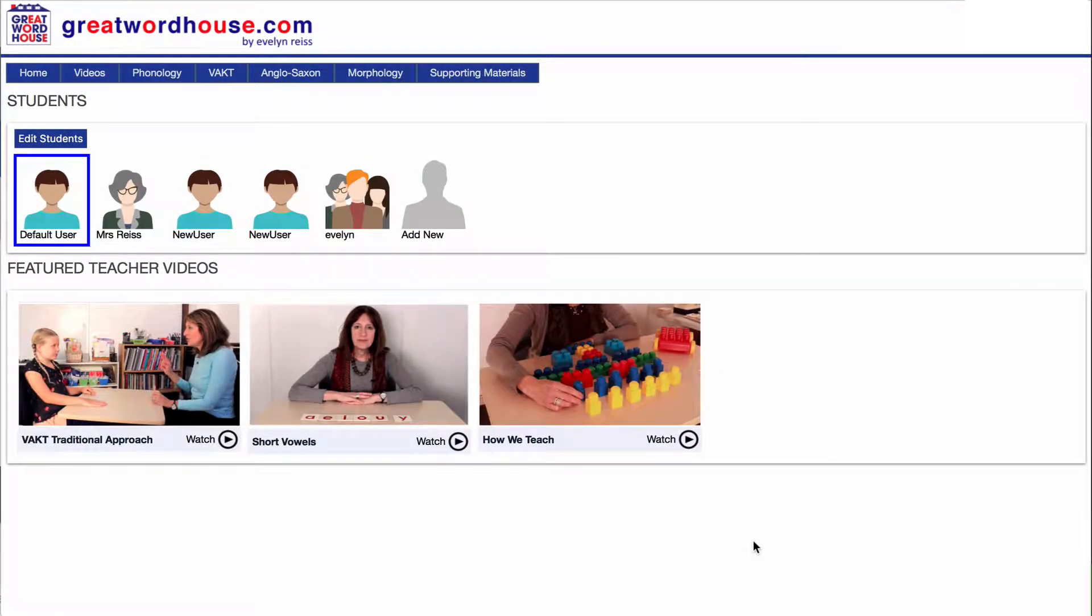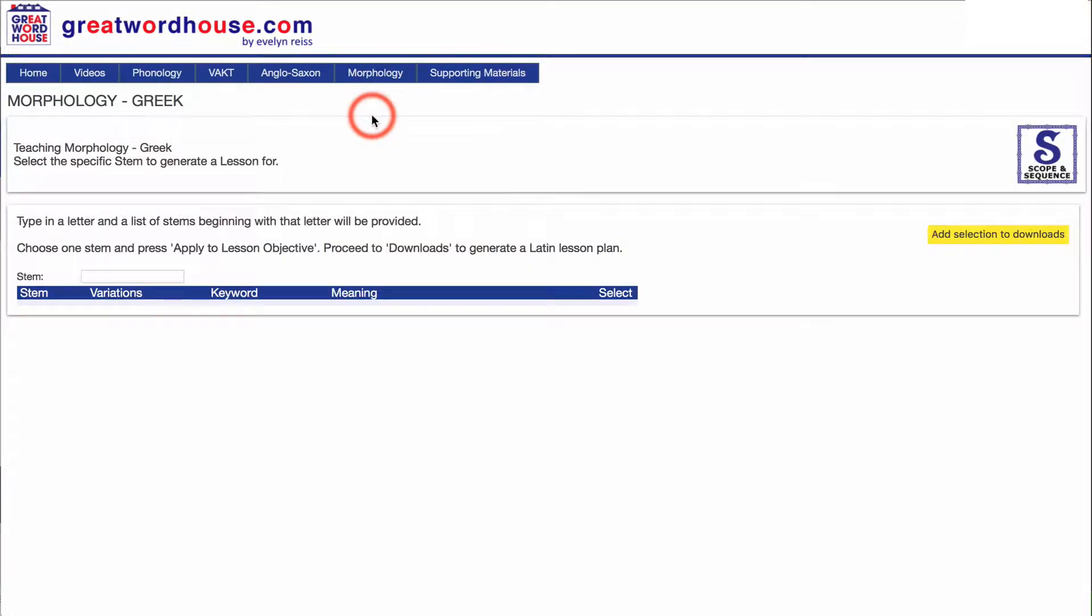To base a lesson plan on a Greek combining form, click the morphology tab at the top of the screen and click Greek. The database is organized according to the alphabet.